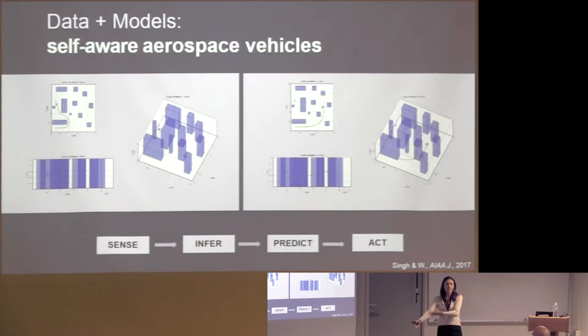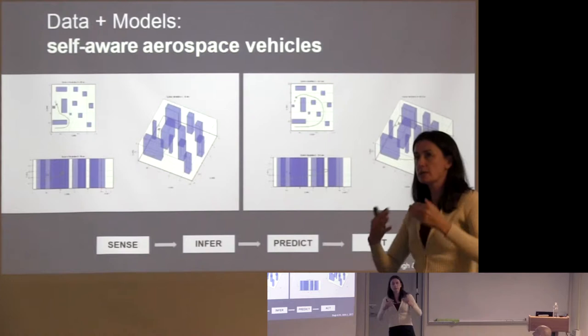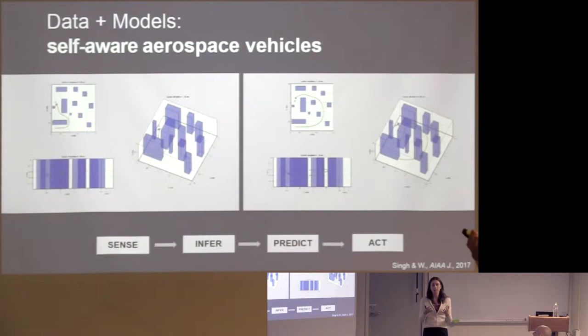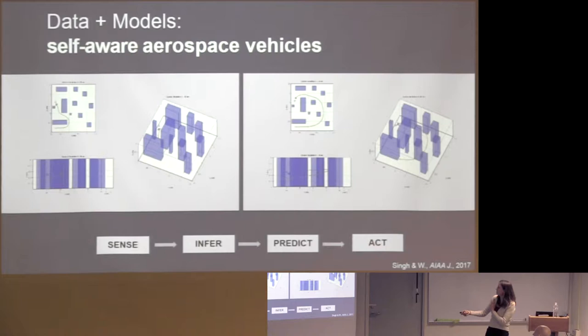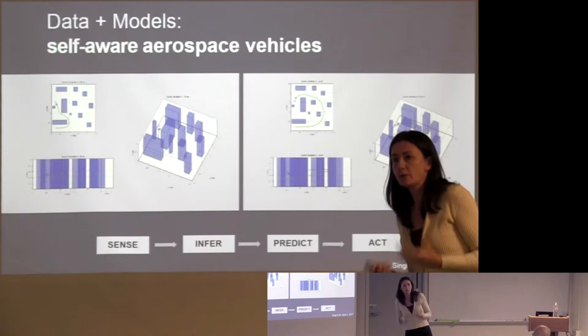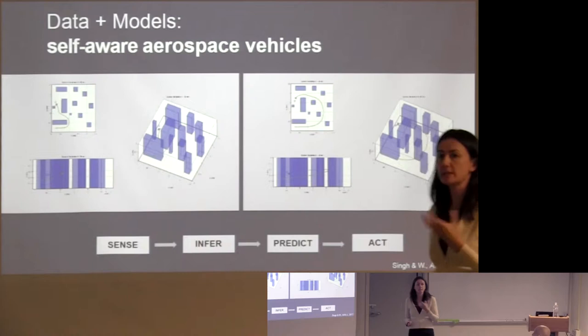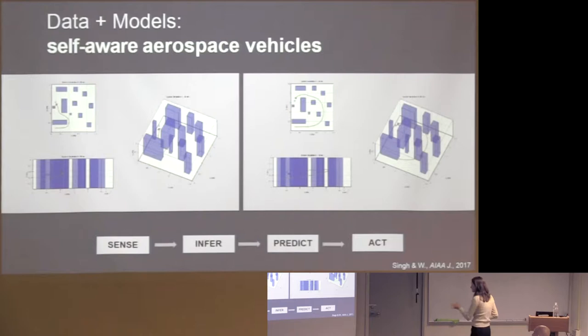Now imagine the scenario where the vehicle is flying and gets damaged — something hits it on the wing. Could you take data from the sensor skin, solve an inference problem to infer just how damaged the vehicle is, make predictions about the flight envelope — how much load can it sustain, how sharp a turn can it make, how many G's can it sustain on a pull-up maneuver? Put that into the path planner, re-plan the mission, and execute. Again it's this data-to-decisions flow. Each of these problems can perhaps be solved in isolation, but the challenge is doing it in a fraction of a second — fast enough to execute a decision on a useful timescale.